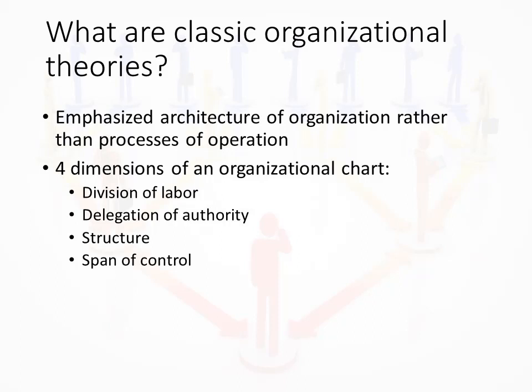Two: delegation of authority. The chain of command is an unbroken line of authority that extends from the top of an organization to the lowest possible level. The purpose of this chain of command is to clarify who reports to whom. Three: structure. An organizational structure defines how job tasks are divided, grouped, and coordinated. Centralization is the degree to which decision-making authority is concentrated at a single point in the organization. In centralized structures, top level managers make all the decisions and low level managers implement them.